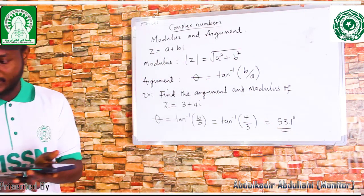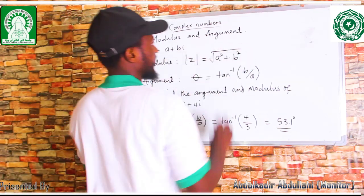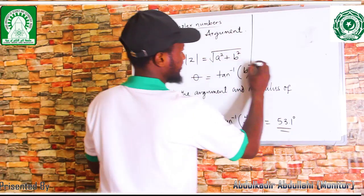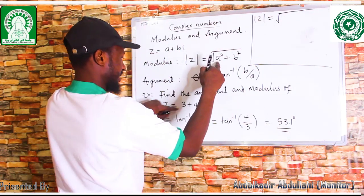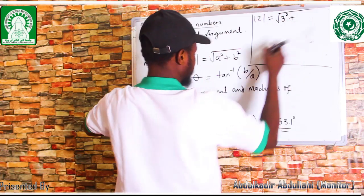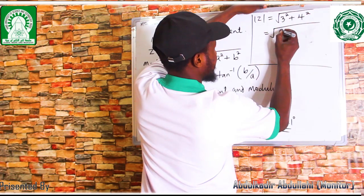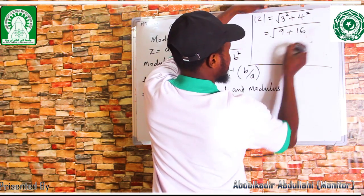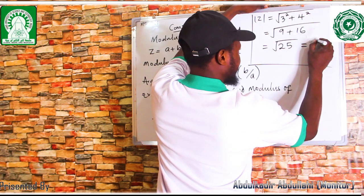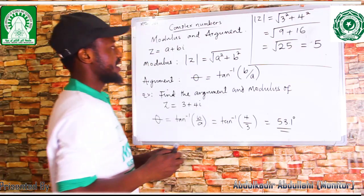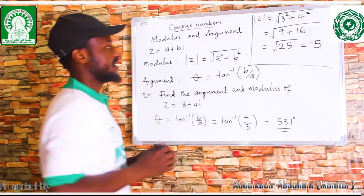Tan inverse of 4 over 3 gives 53.1 degrees. So 53.1 degrees is the argument of this complex number. Now the modulus: the modulus is equal to the square root of a squared plus b squared, where a is 3 and b is 4. That gives root of 9 plus 16, which is root of 25, which equals 5. So the argument is 53.1 degrees and the modulus is 5.